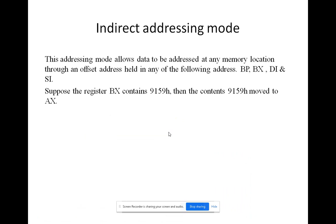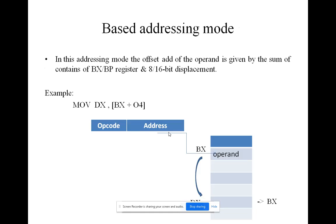Indirect addressing mode: this addressing mode allows data to be addressed at any memory location, with the offset address held in any of the following registers: BP, BX, DI, or SI. For example, suppose the register BX contains 9159H, then the contents of memory location 9159H will be moved to the AX register.